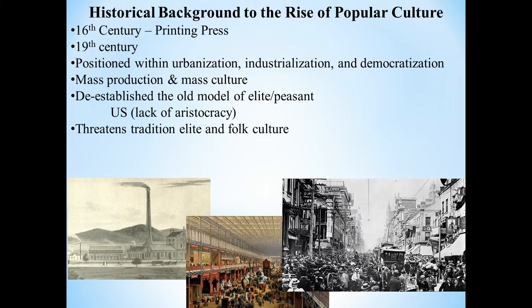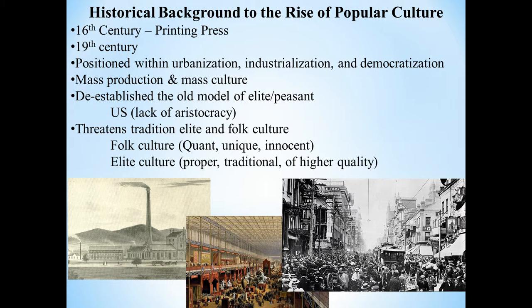Folk culture is thought of as quaint, unique, and innocent, whereas elite culture is seen as proper, traditional, and of high quality. These two were the traditional dynamics of culture. But mass culture challenges all of that — because what happens when you can reproduce the Mona Lisa 50,000 times so everybody can have a copy? What happens when you can produce products — weapons, toys — all the same but of better quality than what you might see in folk culture, where you're relying on individual skill and replacement might be challenging?